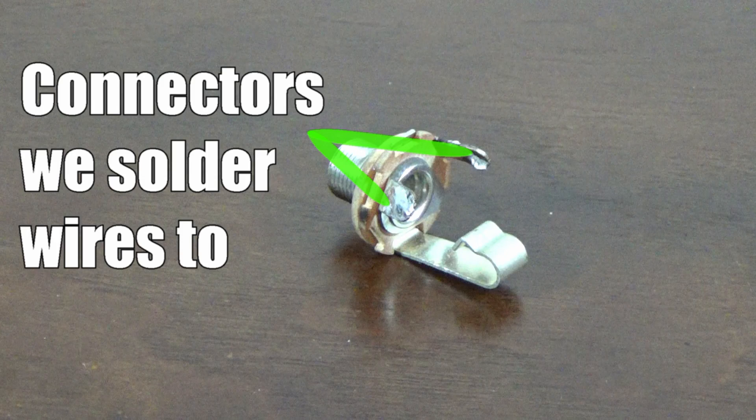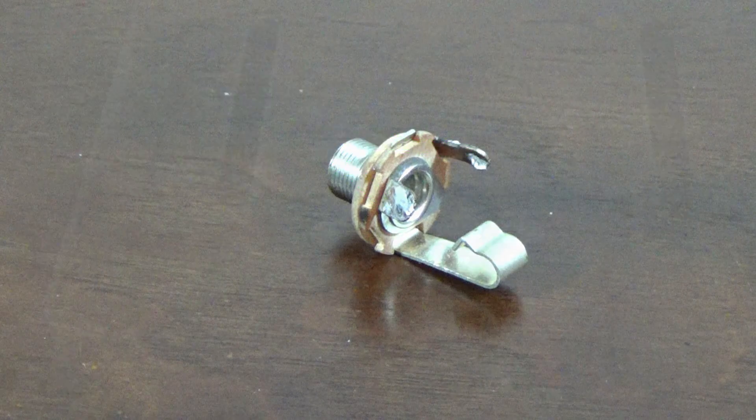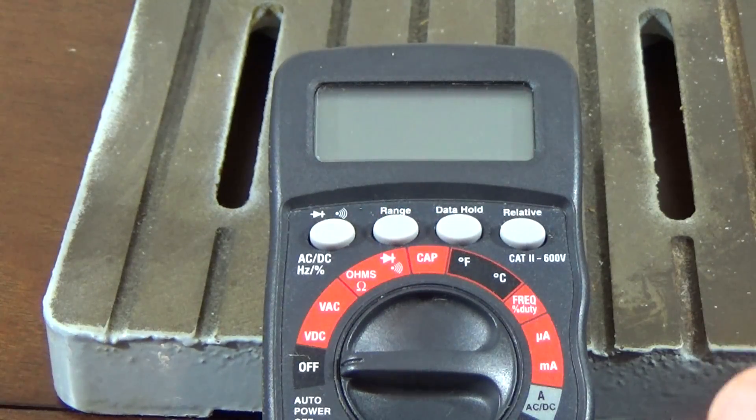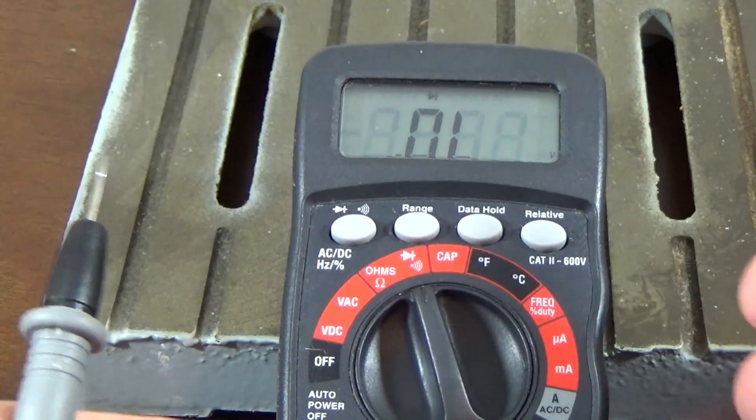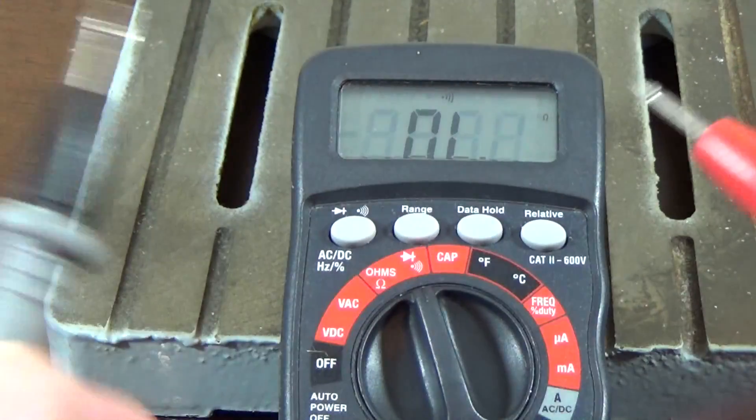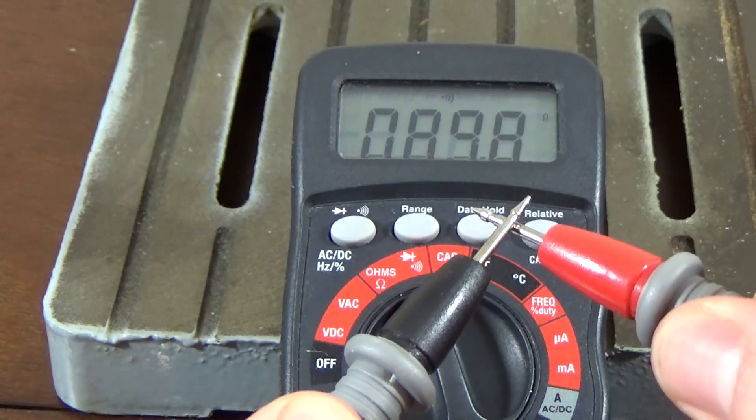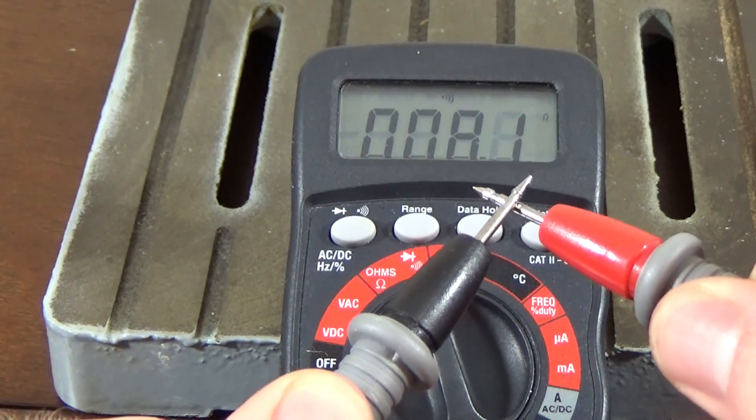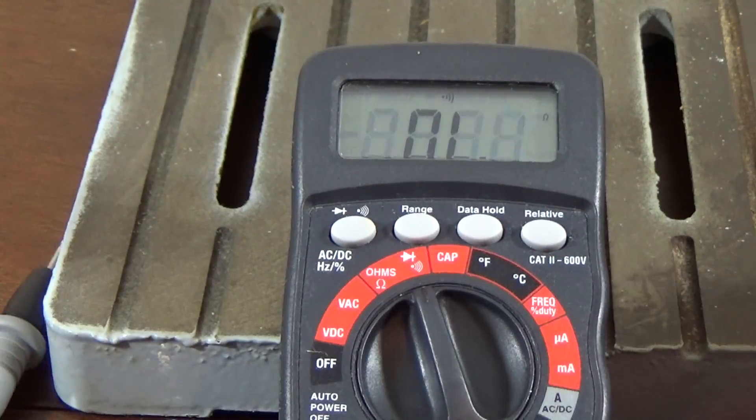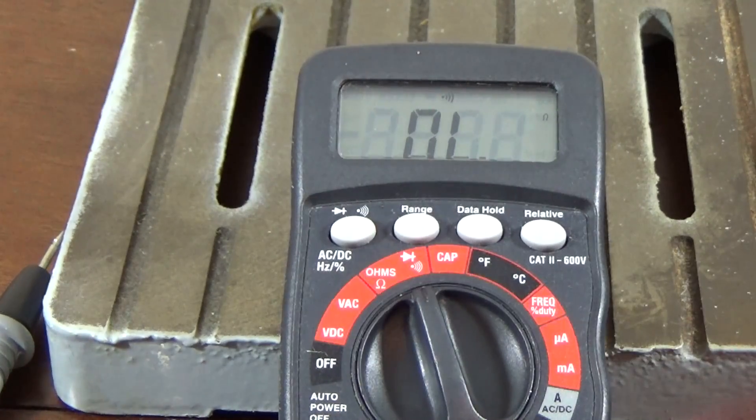We can do this by looking at the conductivity test on our digital multimeters. You can go ahead and select the conductivity test. This is noted by the sound waves icon. When there's a connection between the two probe pins we'll hear a high-pitched squealing sound from the digital multimeter.